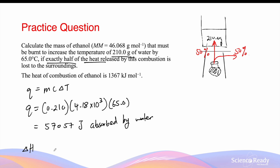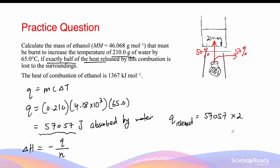The next part is to consider the equation: enthalpy change equals to minus Q divided by moles of ethanol. Keep in mind that this Q in the equation is not necessarily the same as the Q in the first equation. The first Q is the energy absorbed by the water, whereas this Q is the energy produced by the spirit burner, or the combustion reaction. In this experiment, only half of the energy from the spirit burner has been absorbed by the water. So the 57,057 joules calculated is only half the energy produced. We have to multiply this number by 2 to find out the original amount of energy released by the combustion. So Q released by the combustion is actually equal to 57,057 times by 2, which is approximately 114,114 joules.